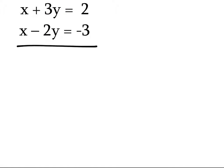On this one, remember — whatever you're eliminating, they need to have opposite signs. What would we eliminate here, the Y's or the X's? The X's. The problem is they don't have opposite signs. So we're going to make them opposite by multiplying everything by negative 1. So we're going to change the signs on the bottom equation — make that X a negative, that minus becomes a plus, and that negative 3 is now a positive 3. Now when we add these, we eliminate the X's. What's X minus X? Zero. 3Y plus 2Y? 5Y. 5Y equals 2 plus 3.